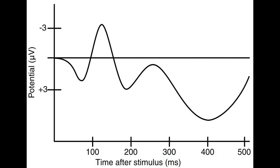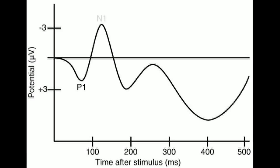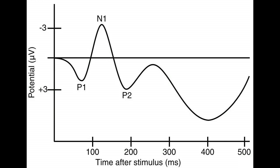Some well-known ERPs include the P100 wave, which represents early attentional selection. The N100 wave, which is elicited by unpredictable stimuli in the absence of task demands. The P200 wave, still being heavily researched, is involved in attention-modulated perceptual processing.